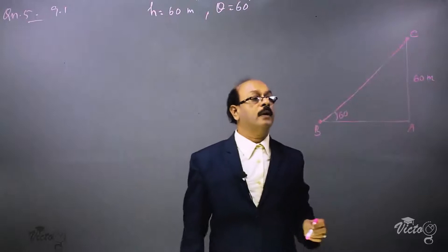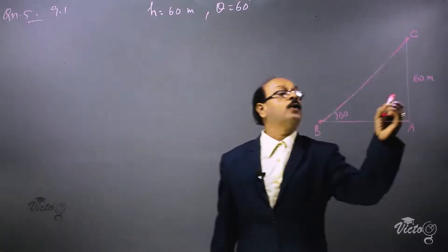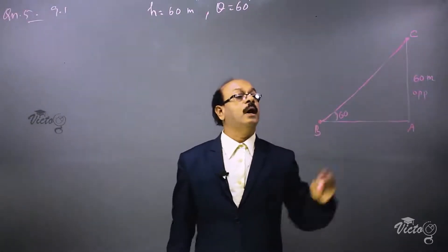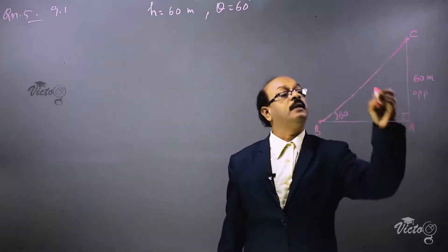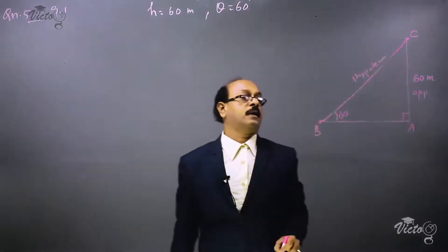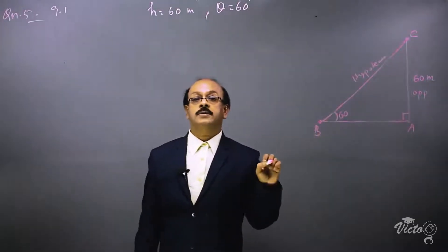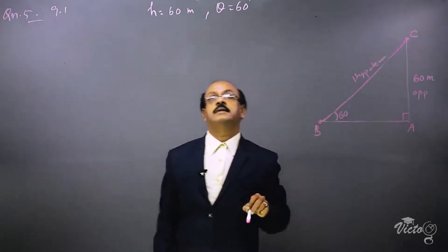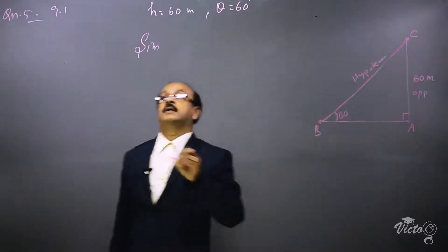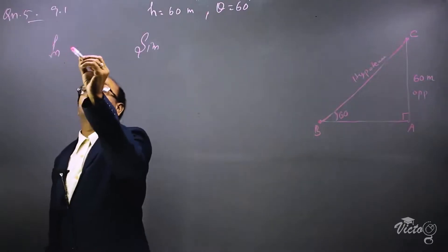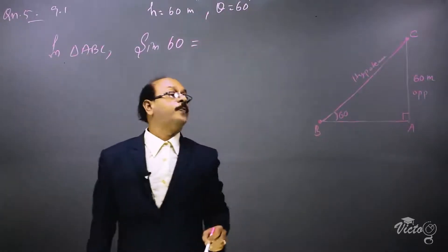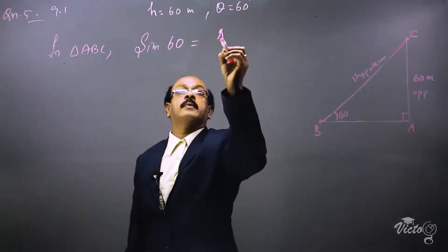The opposite side of 60 degrees is known to us and we have to find the hypotenuse. Since this angle is 90 degrees, BC is the hypotenuse and this is the string. For opposite side over hypotenuse, we consider the sine ratio. Taking sine 60 in triangle ABC: sine 60 is equal to opposite side AC divided by hypotenuse BC.